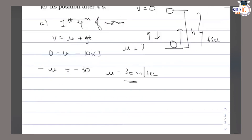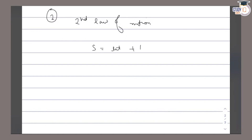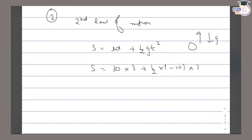Now we have to find the maximum height. For height, we use the second equation of motion: s = ut + ½gt². We put initial velocity u = 30, time t = 3 seconds, and g = -10 (since the ball is going up). Solving this gives s = 45 meters. This is the maximum height.